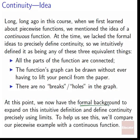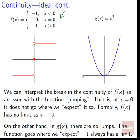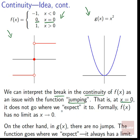At this point, we actually have the formal background to expand on this intuitive definition and actually define continuity in precise terms using limits. To help us see this, we'll compare a piecewise example with a continuous function. Here's our piecewise example we've been working with, and here's our continuous function friend: g of x equals x squared, the good old parabola. Over here in our piecewise break, we can interpret the break in continuity — this part where it jumps — as an issue with it being continuous.